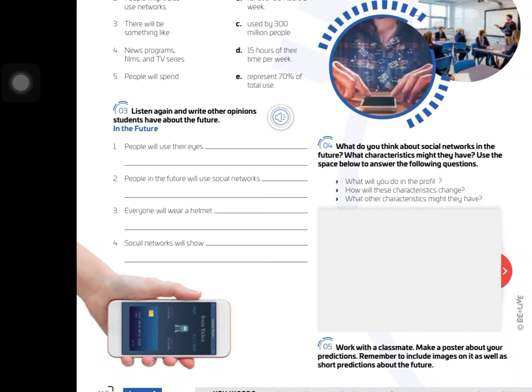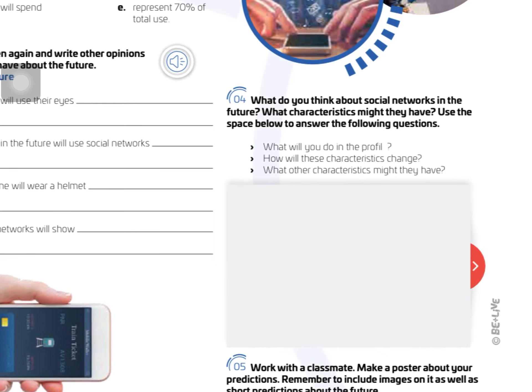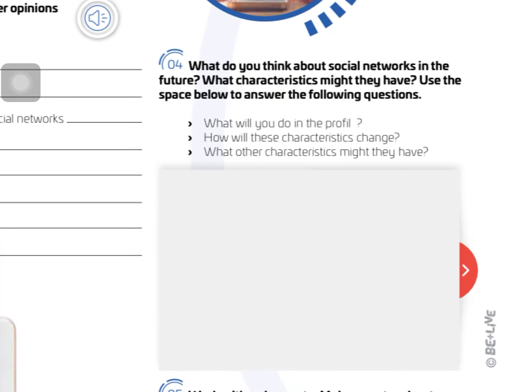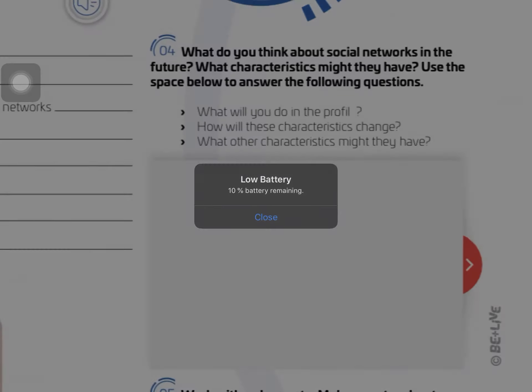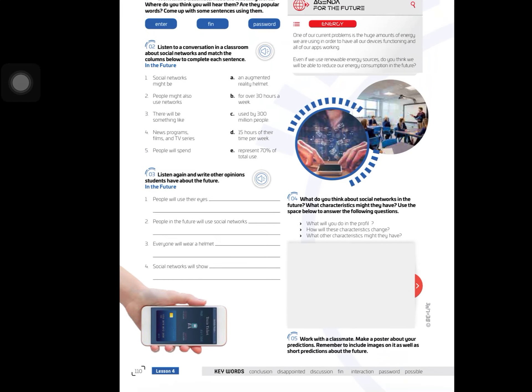On exercise 3, listen again and write other options students have about the future. Exercise 4: What do you think about social networks in the future? What characteristics might they have? Use the space below to answer the following questions: What will you do in the profile? How will these characteristics change? What other characteristics might they have?